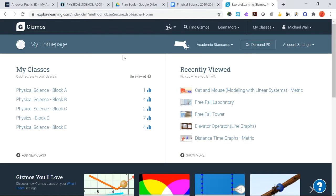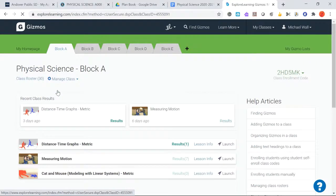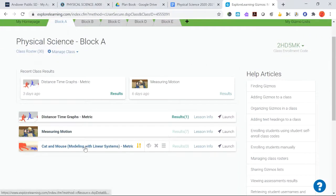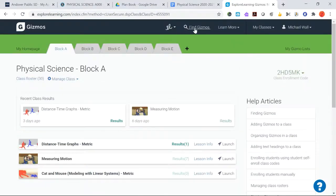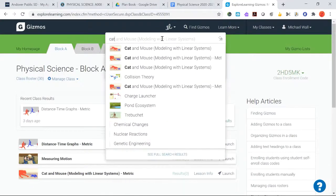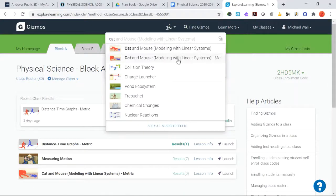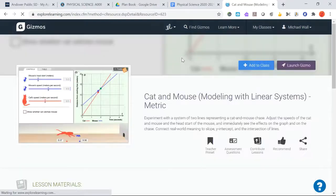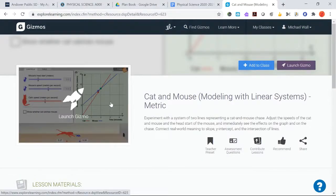Hello students, time for another Gizmo. This one we're going to be doing today is called Cat and Mouse Modeling with Linear Systems, the metric version. The easiest way to get that is if you click on your class, chances are I've already added it to your class over here. If not, you can always go to Find Gizmos and type in the word cat, and we're just going to click on Cat and Mouse Modeling with Linear Systems, the metric one, and then we'll click to launch the Gizmo.